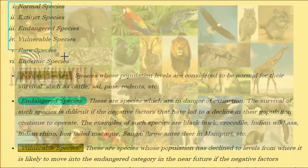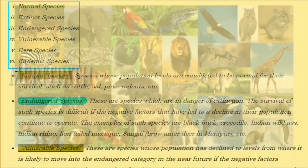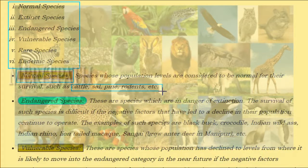Species can be classified as normal species, extinct species, endangered species, vulnerable species, rare species, and endemic species. Normal species are those whose population levels are considered adequate for survival, such as cattle, sal, pine, and rodents. Endangered species are those in danger of extinction — the survival of such species is difficult if the negative factors causing their population decline continue to operate.